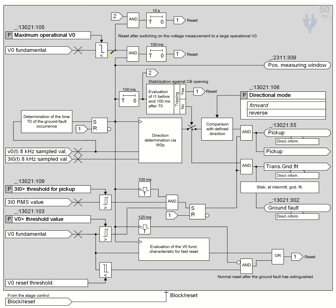Welcome to the first session of the Directional Transient Groundfault. In this session we are going to discuss the reset process of the function. In the previous sessions we discussed block A, block B, and block C, which were very important blocks. In this session we discuss how the system should reset when there is no fault or when there is a mistaken starting of the operation.